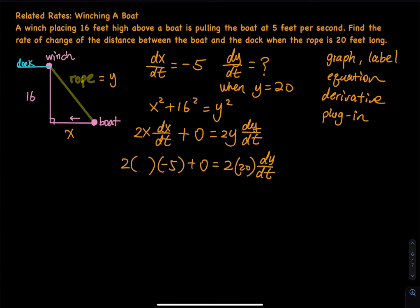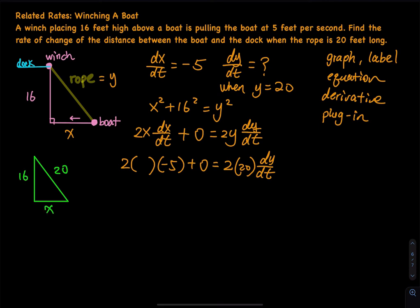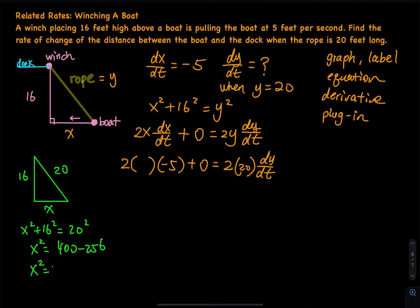We need to find x because we cannot solve one equation with two unknowns. To find x, use the Pythagorean theorem again with a right triangle: y equals 20 and the height is always 16. So x squared plus 16 squared equals 20 squared. x squared equals 400 minus 256 equals 144. Therefore x equals 12. Take the square root of both sides — don't worry about negative 12 because distance cannot be negative.